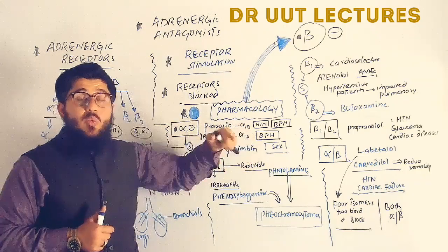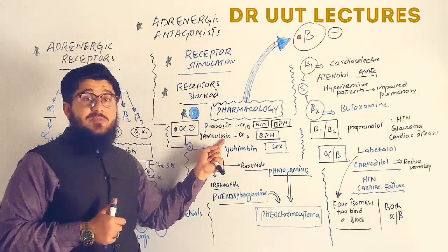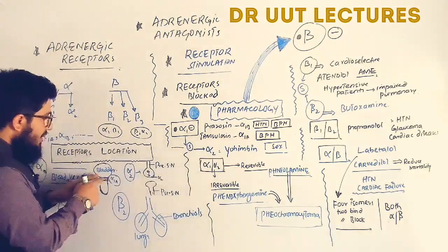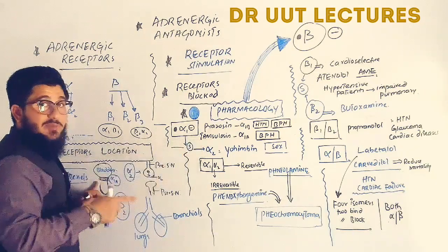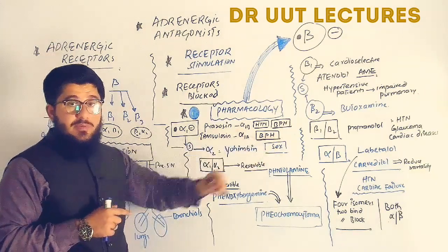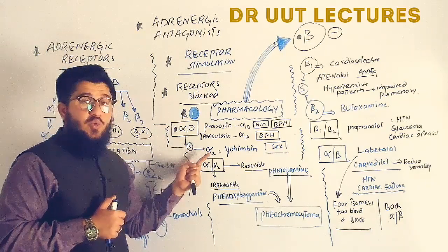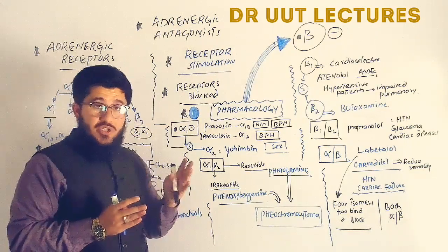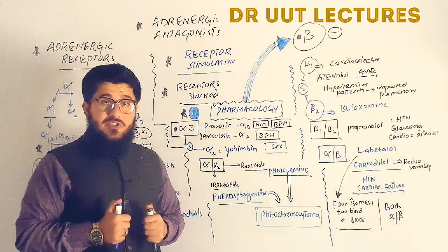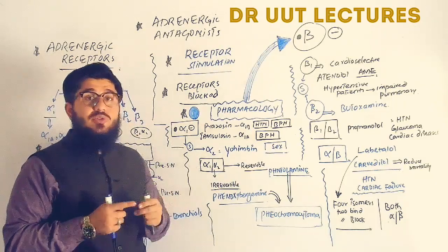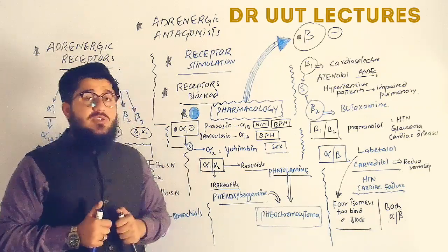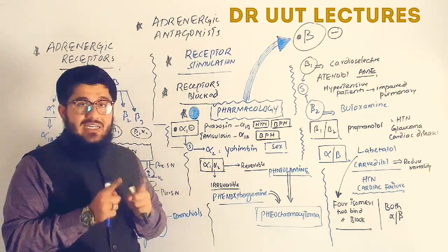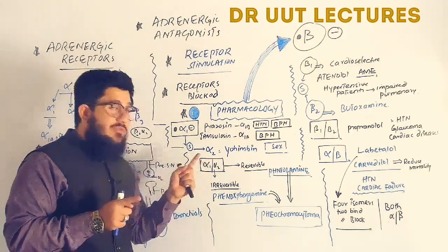Tamsulosin is alpha-1a selective, specifically targeting alpha-1a receptors located on the sphincter, making it specifically used for treating benign prostatic hyperplasia. Yohimbine is the alpha-2 selective drug, historically used for sexual dysfunctions like erectile dysfunction, but today it is primarily used for research purposes. Non-selective alpha-1 and alpha-2 blockers block both receptor subtypes.